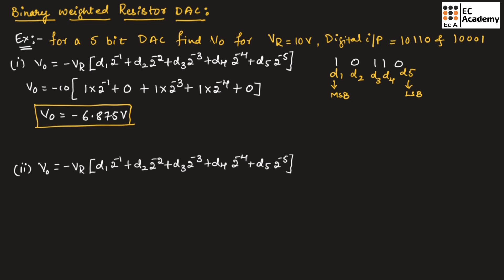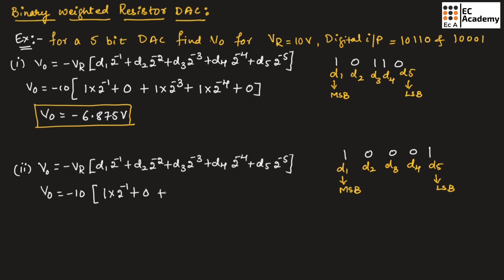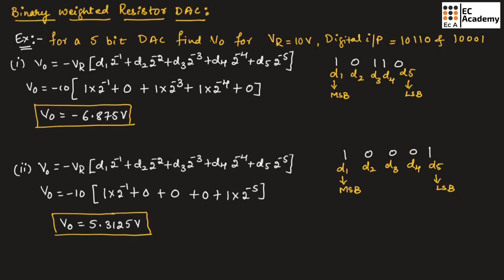Let us consider the second digital input, which is 10001. Here D1=1, D2=0, D3=0, D4=0, D5=1, where D1 is the MSB and D5 is the LSB. Substituting this digital input into the output voltage formula, V0 equals minus 10 into [1·2^(−1) plus 0 plus 0 plus 0 plus 1·2^(−5)]. Solving this, we get the output voltage as 5.3125 volts. This is about binary weighted resistor DAC.